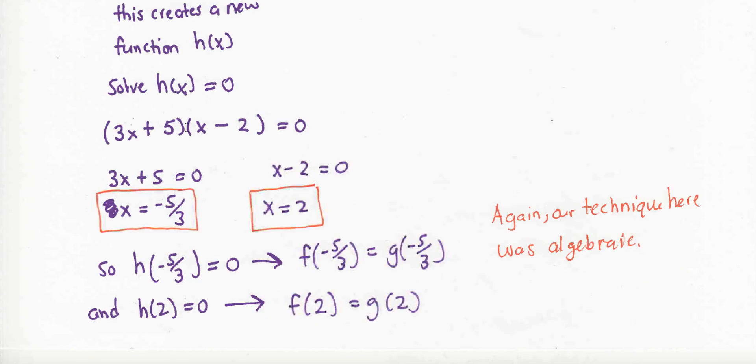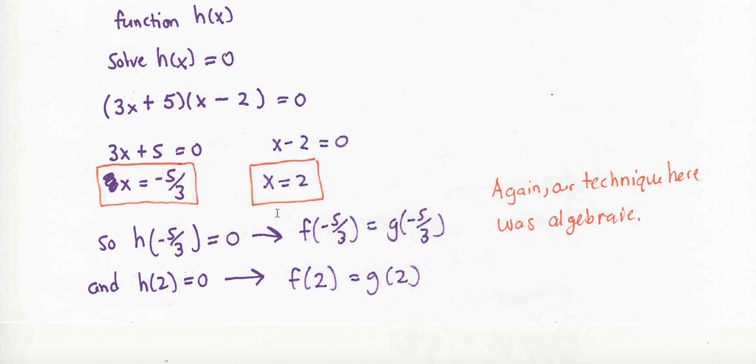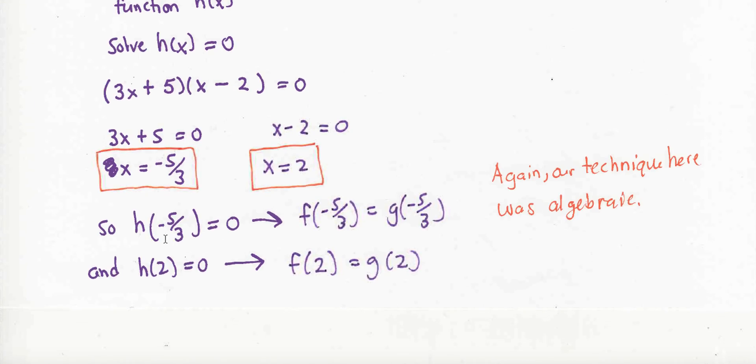So I factor h. I use the 0 product property and separate this into two equations. And my answers are negative 5 thirds and 2. And so by plugging negative 5 thirds into h and getting 0, I've also solved where f of negative 5 thirds equals g of negative 5 thirds. And where h of 2 is equal to 0 also implies, that's what the arrow means, that f of 2 is equal to g of 2.